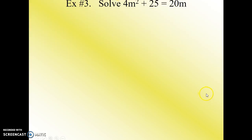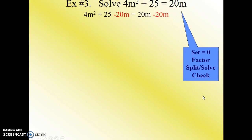Let's move on to example 3. So here we're asked to solve 4m squared plus 25 equals 20m. Notice here again that our equation is not equal to 0, so we will need to subtract 20m from both sides. Again, put it in descending order so that we have m squared, m, and no m.